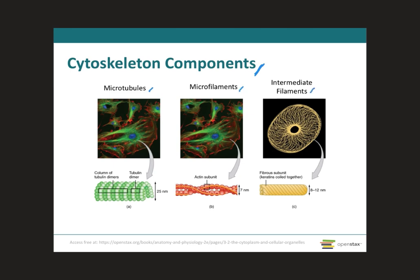Even though both microtubules and microfilaments start with 'micro,' which means small, a tube is going to be bigger than a filament. So microtubules are the thickest of the three filaments, made up of a hollow tube composed primarily of protein units called tubulin. These filaments help provide support and structure to the cytoplasm, and are also involved in cell division and transport of intracellular materials. Microtubules also make up two types of cellular appendages important for motion: cilia and flagella.